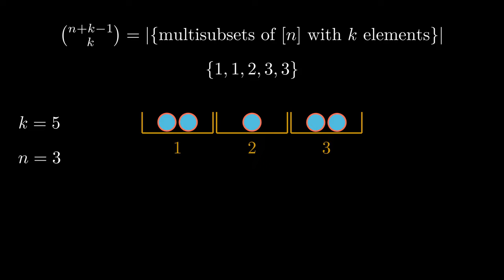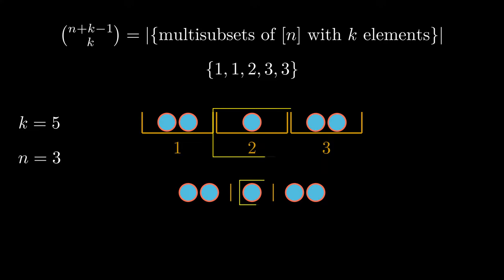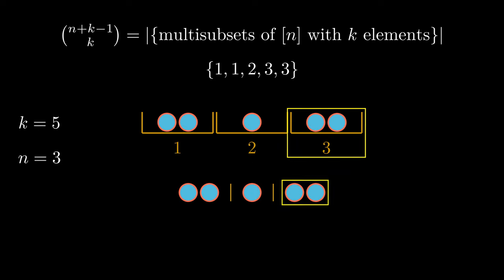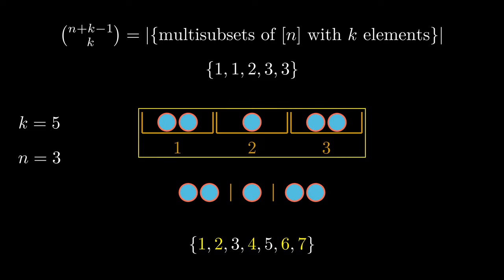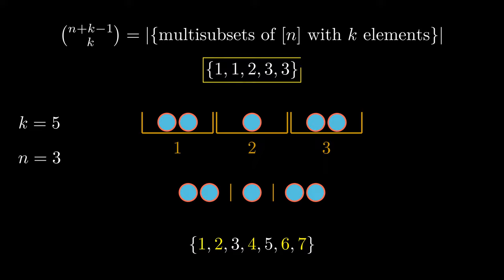We can now form a bijection between balls in the boxes and balls with n minus 1 dividers, where each of the regions between the dividers represents a box. By simply counting the orderings of balls and dividers, we also get the number of ways of distributing the balls in the boxes. The number of ways to order the balls and dividers is k plus n minus 1 choose k — simply choosing where we place balls, and the other places are automatically chosen to be dividers. Take a minute to trace how each way of choosing the subset corresponds to our multi-set, and that every multi-set of n with k elements can be made this way.